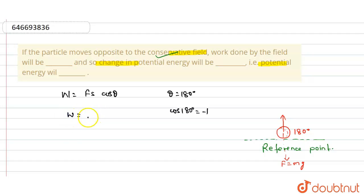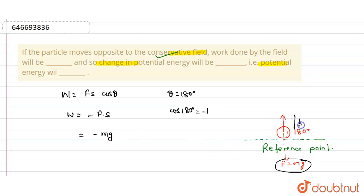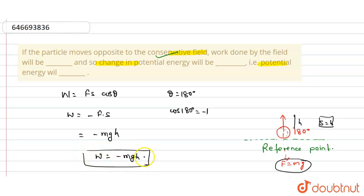So we can write W = -F·S. The force is mg and suppose the particle goes to a height H, so displacement S = H. Therefore the work done W = -MgH. The sign is negative, so the work done by the conservative force is negative.